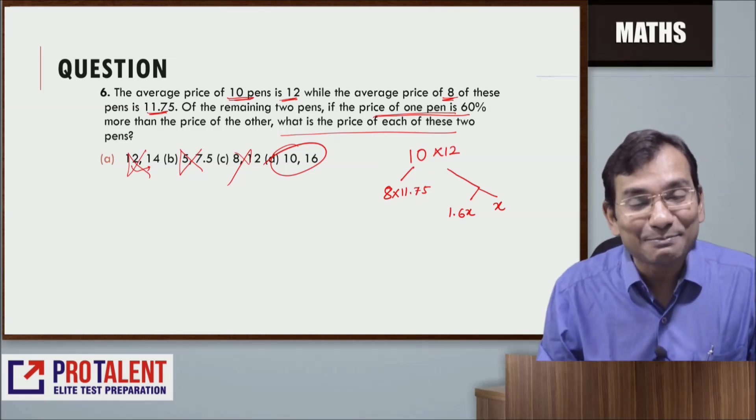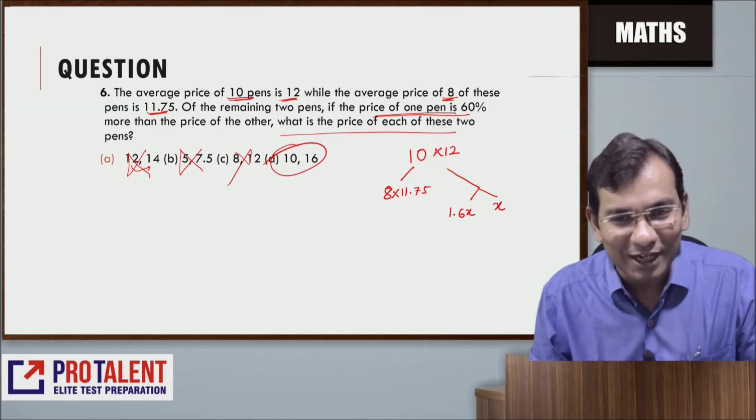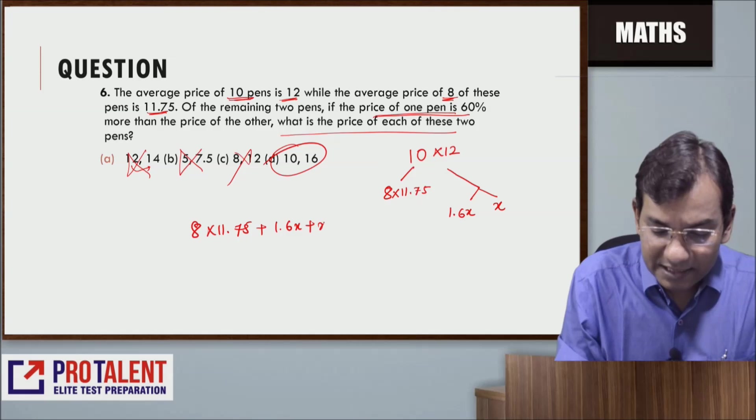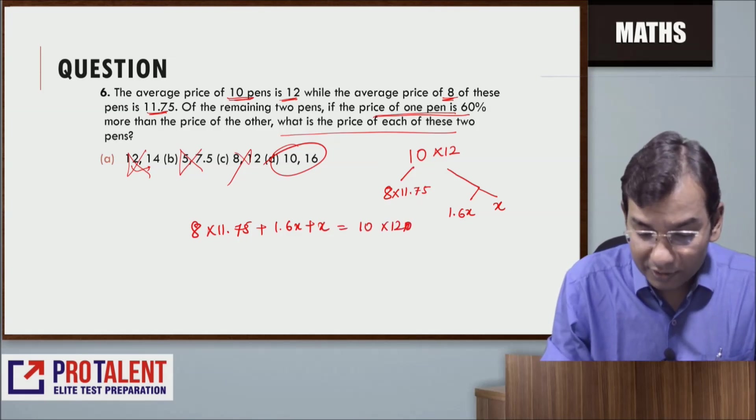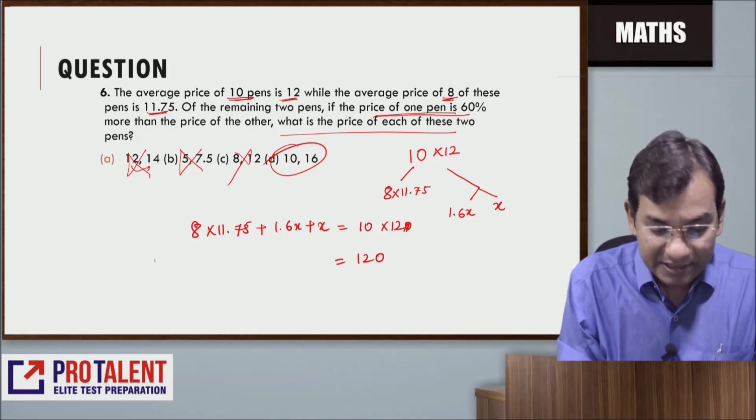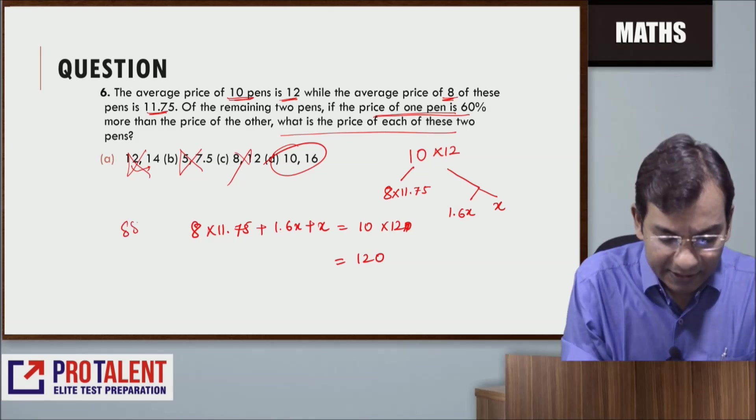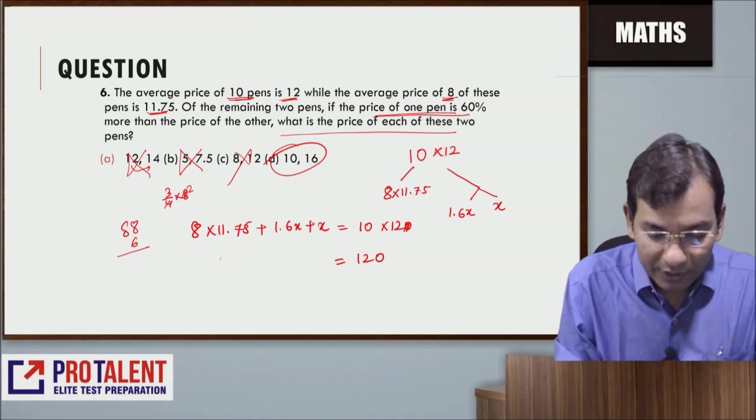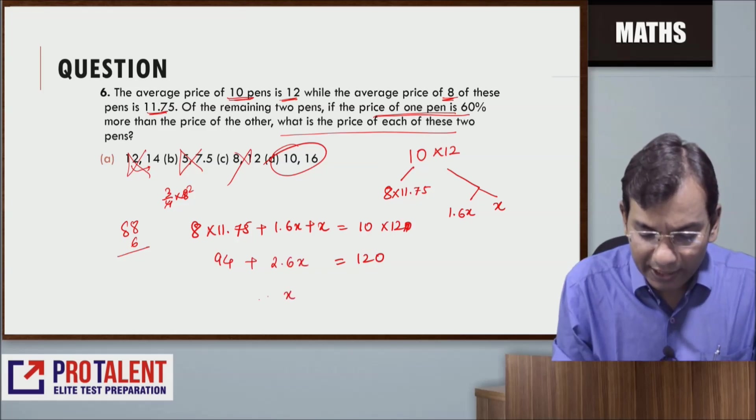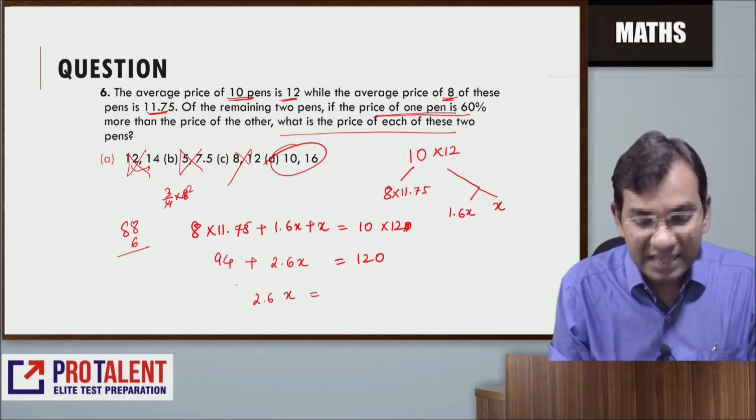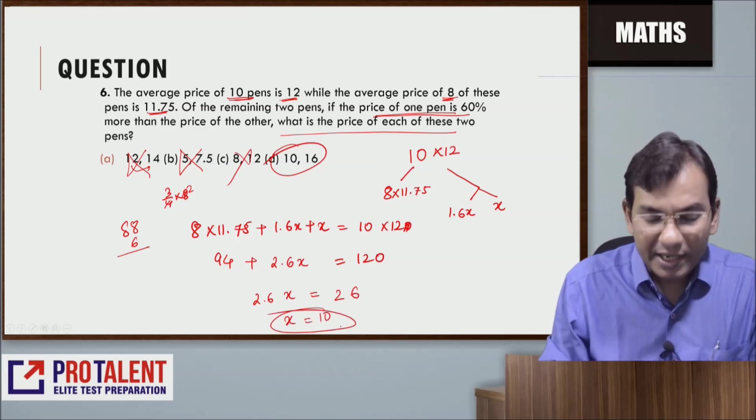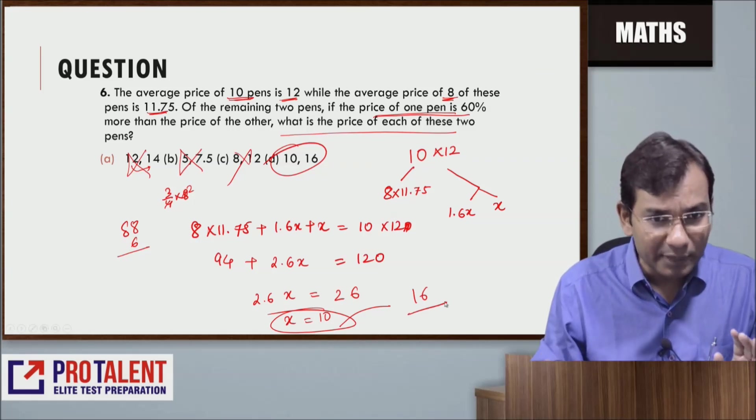But if options weren't there, how would we do it exactly? We'd write: 8 × 11.75 + 1.6X + X = 10 × 12 = 120. This is 88 plus 0.75 × 8, which is 6, so 94 + 2.6X = 120. Therefore 2.6X = 26, so X = 10. One pen is 10 rupees and the other is 16 rupees.